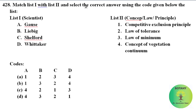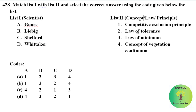Match list 1 (scientists) with list 2 (concepts/laws they proposed). Gause gave the competitive exclusion principle in 1932. Liebig gave the law of minimum in 1840. Shelford gave the law of tolerance in 1931. Whittaker proposed the concept of vegetation continuum in 1975. The correct option is option B.